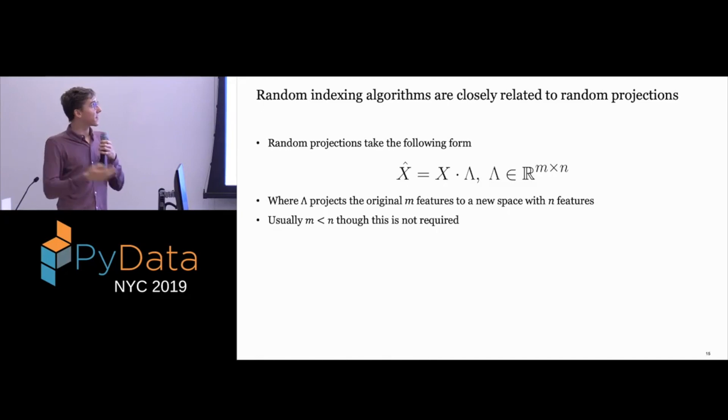Random indexing is closely related to random projections. This is the basic setup for a random projection. Basically, you have your data in this huge X matrix, and you have this lambda, which is your projection matrix, which maps the original M features to some different N-dimensional feature space. Usually the space that you're mapping to is smaller, so you get some kind of dimensionality reduction, but that doesn't always have to be the case. I've seen cases where it's actually larger, and it's just easier to learn in a projected space than it is at the original space. At its most basic, this lambda will just be a completely random matrix. That's obviously not the best way to do it, and there are some rules that you can follow around making a good projection.